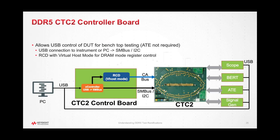The final type of test fixture is the CTC controller board. The controller board provides control to the device under test through a normal USB connector. It basically includes an RCD and a microcontroller. Through the microcontroller, it is possible to get programming access to an RCD that may be on the device test card. The RCD on the controller board in turn is used in virtual host mode and provides programming access to the CA and clock bus. Essentially, the controller test card can be used to enable receiver testing for different device types that are plugged into the DIMM socket.